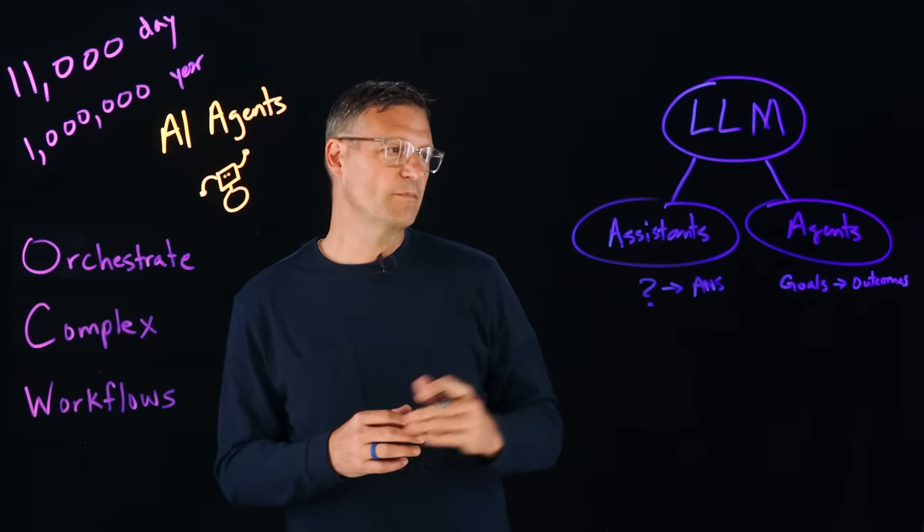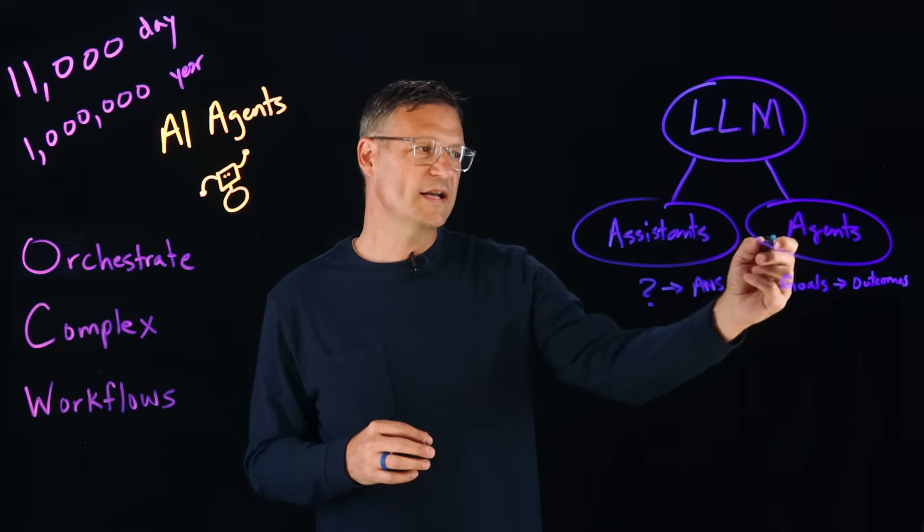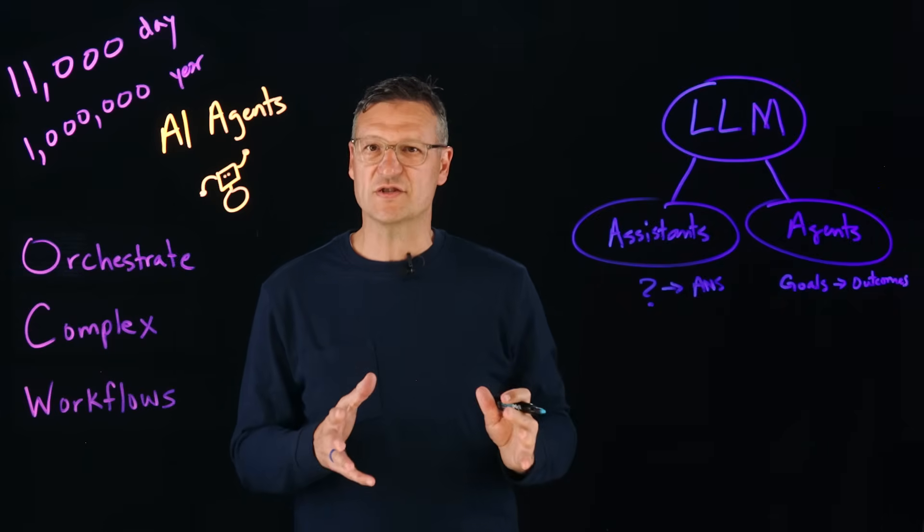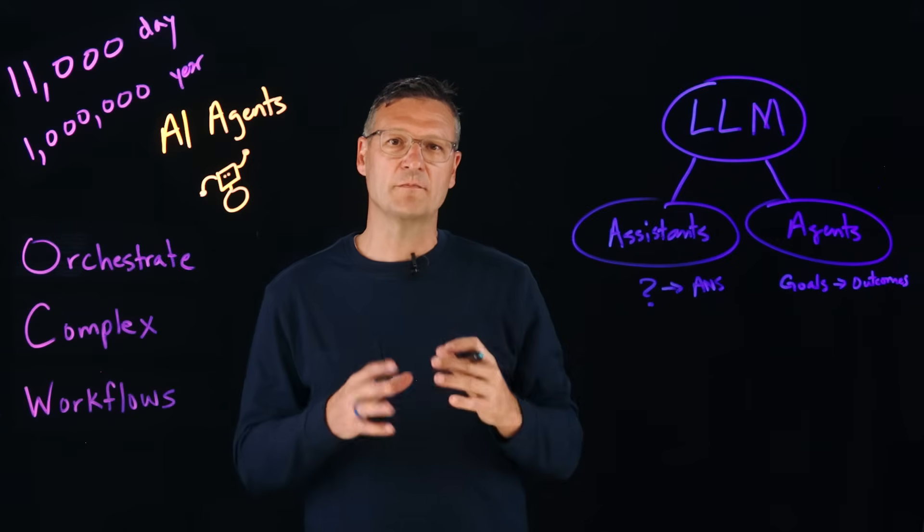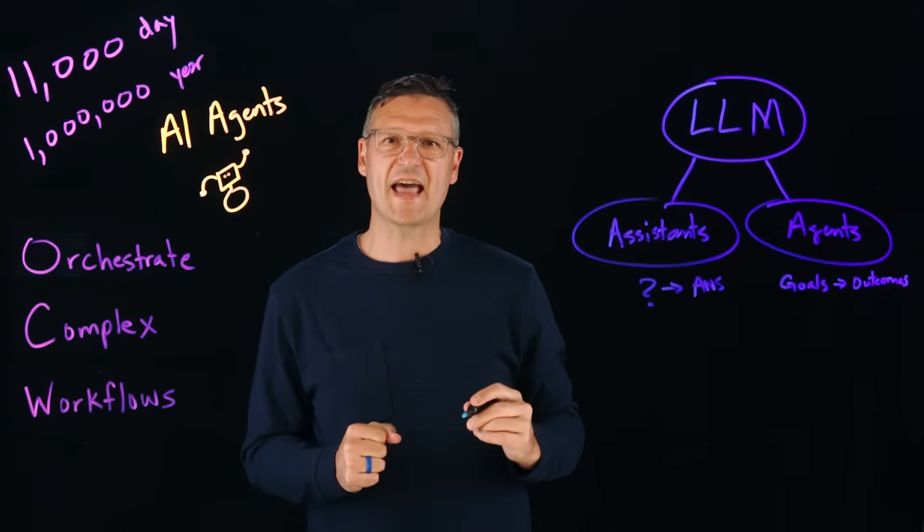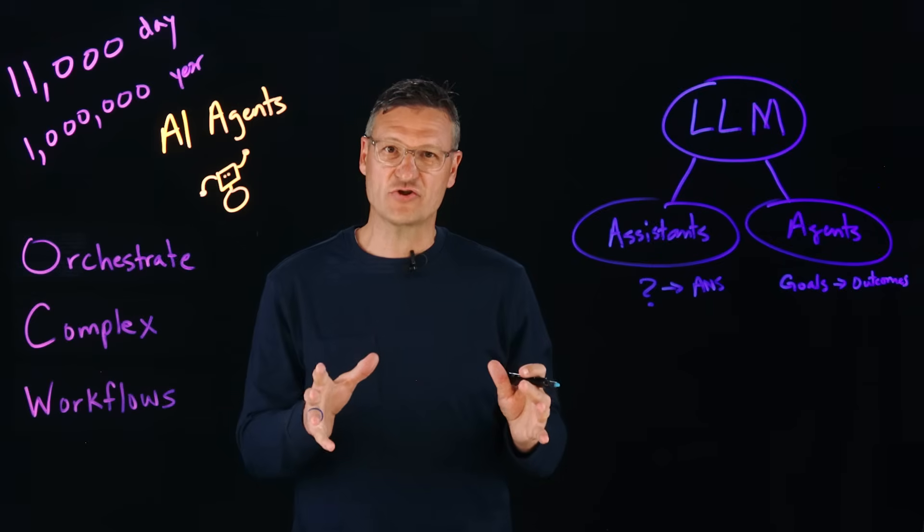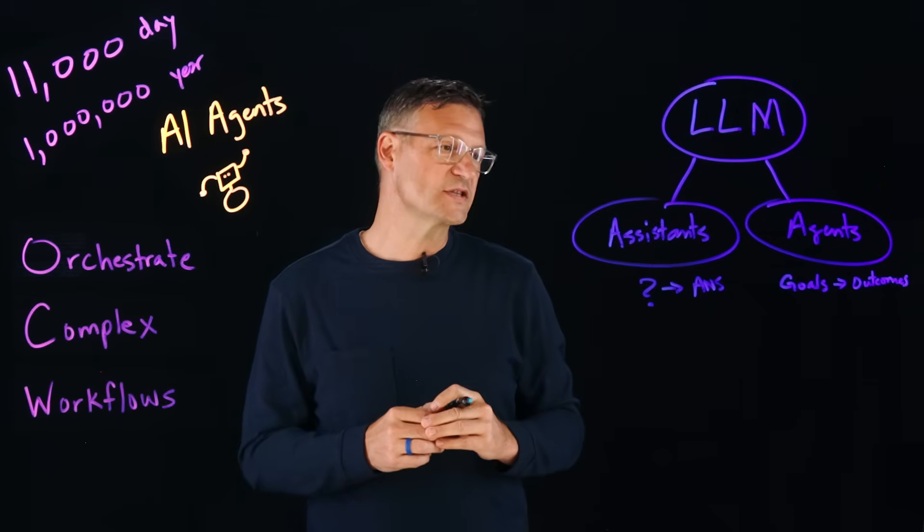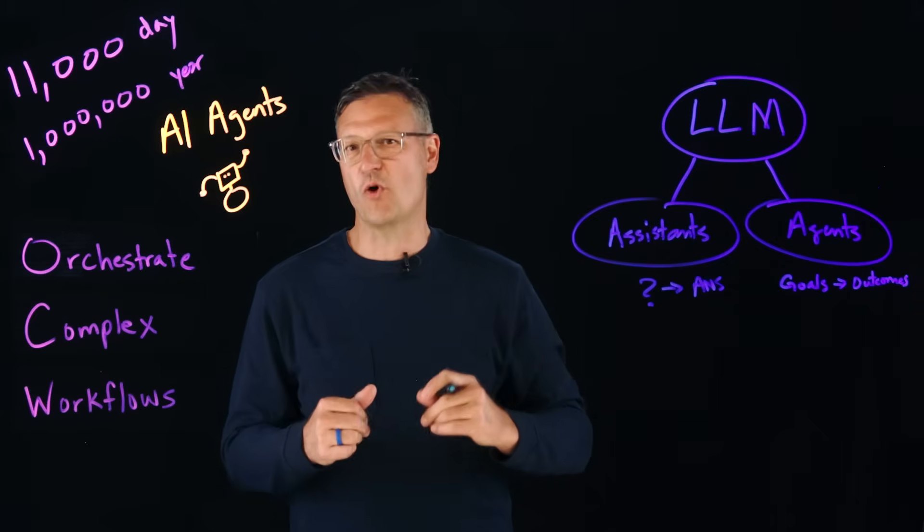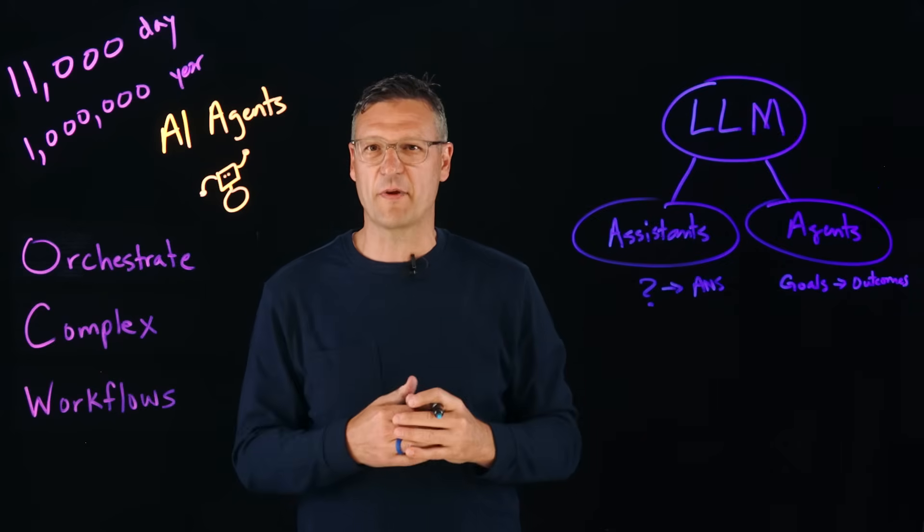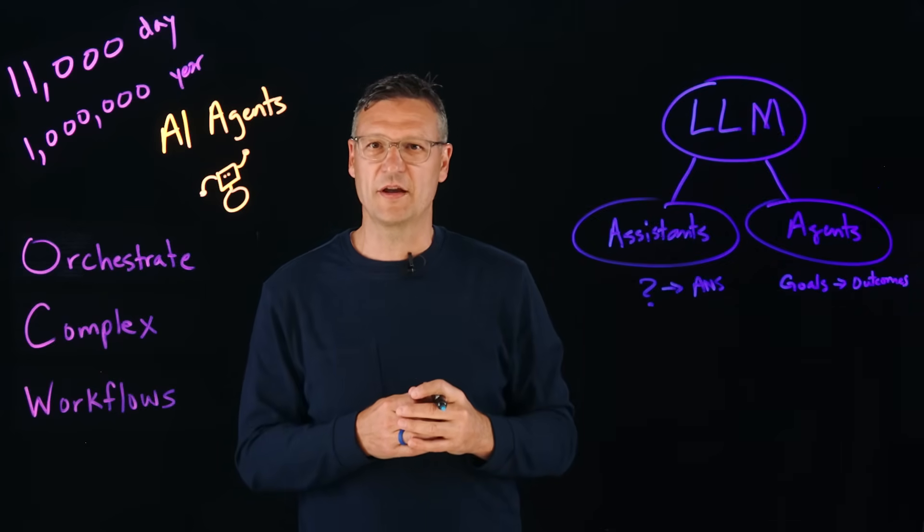The really big difference here is down to the definition of the word agency. Agency means that we are giving the software agency to actually take action at its discretion within the boundaries that we set. Whereas an assistant is just going to sit there until it's prompted, and then it's going to be at the ready to answer us when we prompt it.